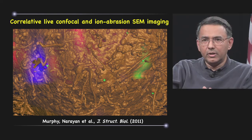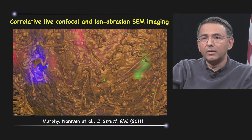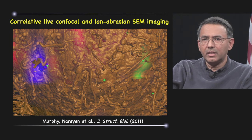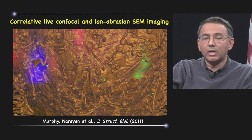we have developed recently methods to carry out correlative live confocal imaging with ion abrasion SEM imaging, with the idea of trying to carry out imaging of localized regions that we identify using a fluorescence microscope. In this example, you see on the left hand side a slice through a confocal image of an HIV particle, shown in green,